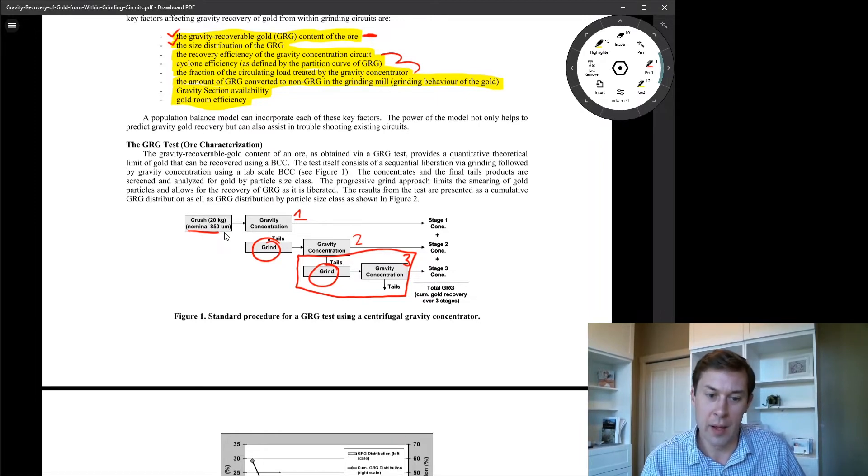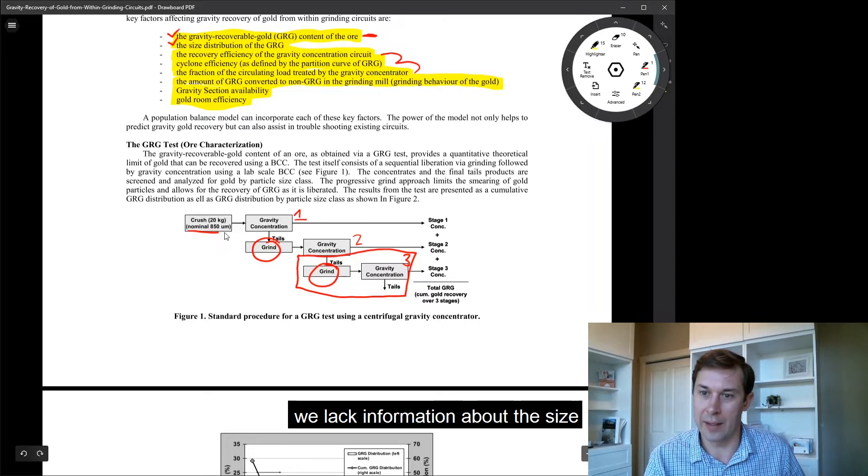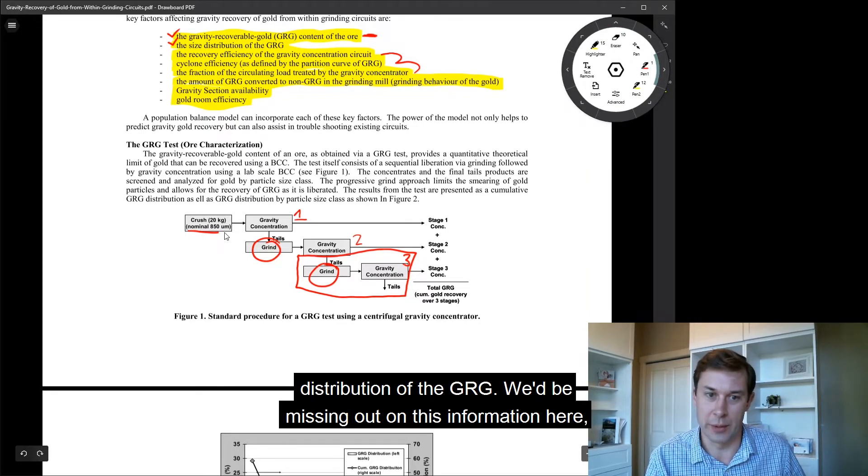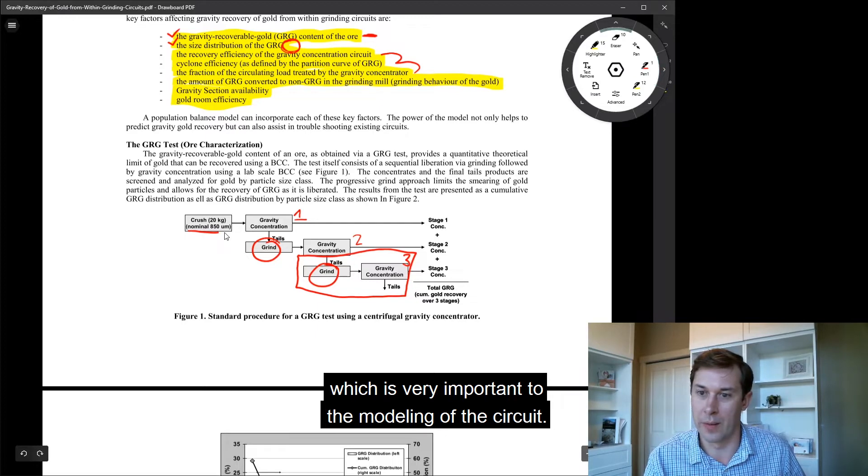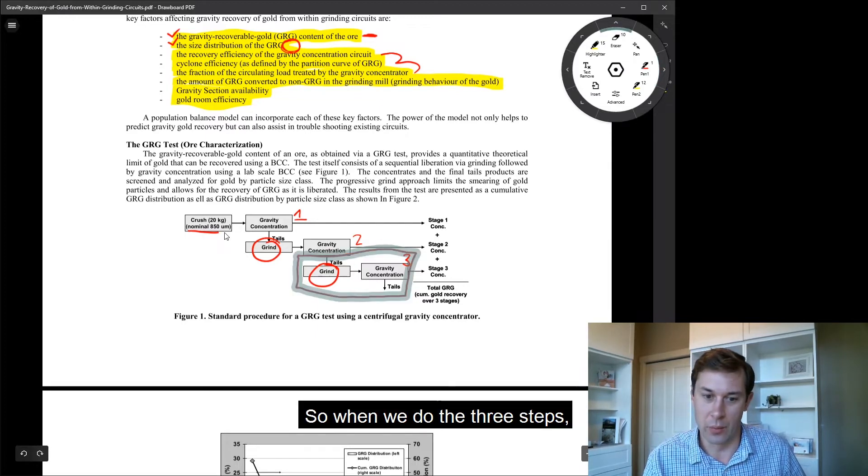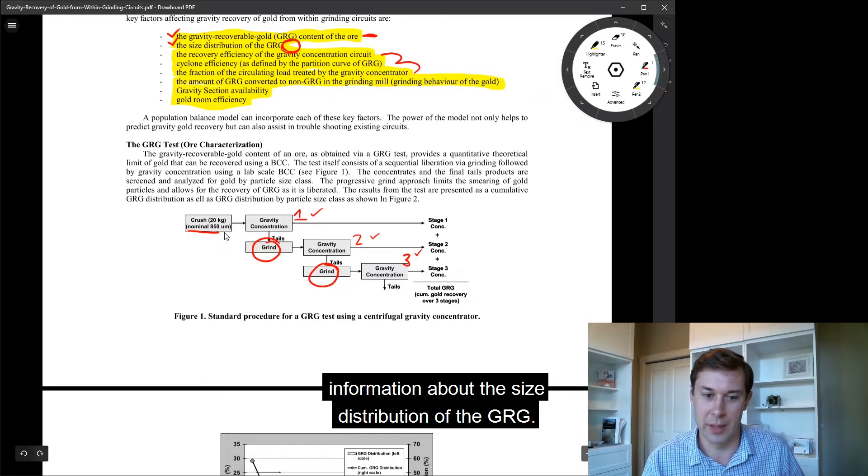Which is fine. But with only that, we lack information about the size distribution of the GRG. We'd be missing out on this information here, which is very important to the modeling of the circuit. So when we do the three steps, we actually build a release curve that gives us information about the size distribution of the GRG.